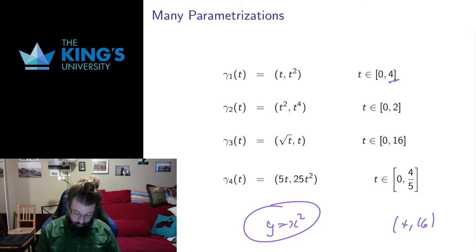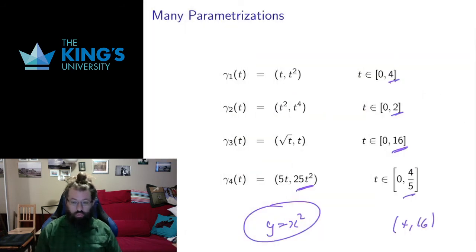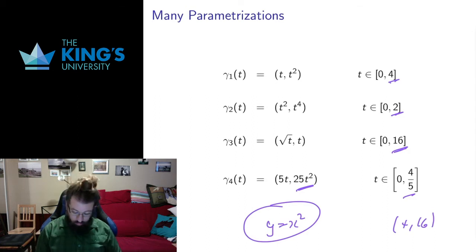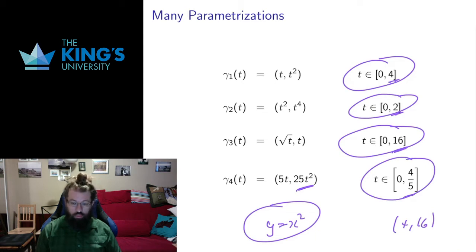When t is 4 I get (4,16); when t is 2 I get (4,16); when t is 16 I get (4,16); when t is 4/5 I get (4,16). So they all start at (0,0) and end at (4,16) — they all describe exactly the same shape. But they have different rates of movement along it. This is the notion of a parametric curve being not just a shape, but also a notion of movement and rate of movement along the shape. One takes 4 seconds, another takes 2 seconds, another 16 seconds, and another just 4/5 of a second — so they are different parametrizations of the same curve.